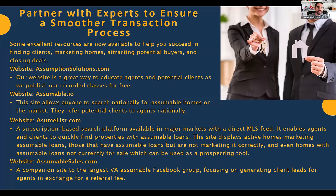Let me do a quick demo on AssumeList — it is the only search platform specifically geared for B2B. All the other platforms for finding assumable mortgages are B2C, designed for consumers. AssumeList is specifically designed to help agents with tools to grow their business. Not only can you search actively listed homes, you can also search for off-market properties. We're at 18 states right now with an active MLS feed directly tied in. When a property with an assumable mortgage comes up for sale, we know about it immediately. The platform currently has almost 28,000 properties in active status for sale today — every single one with an interest rate below 5%, the vast majority below 3%.